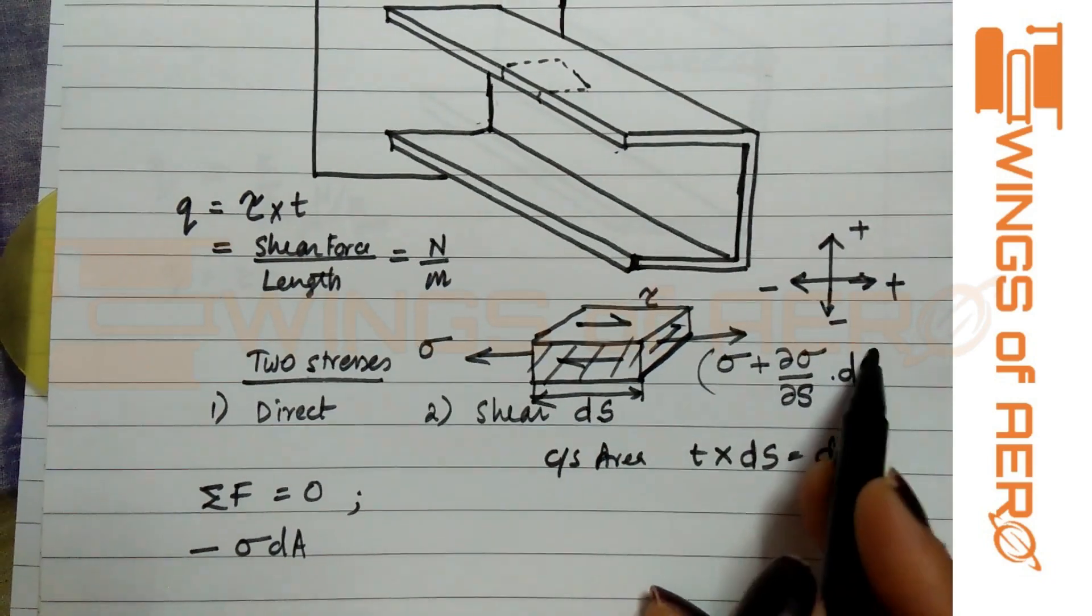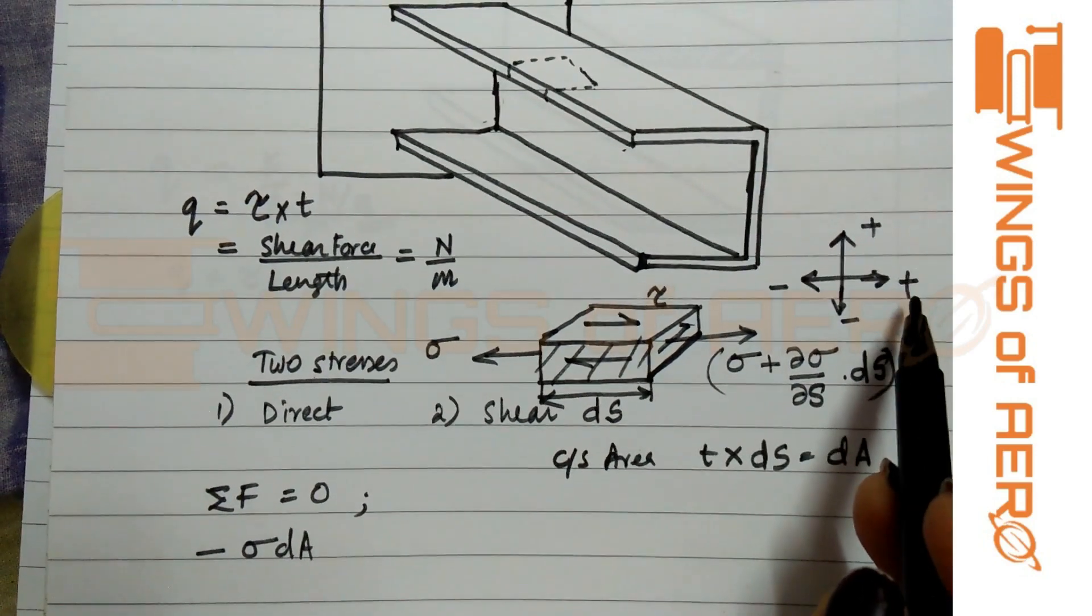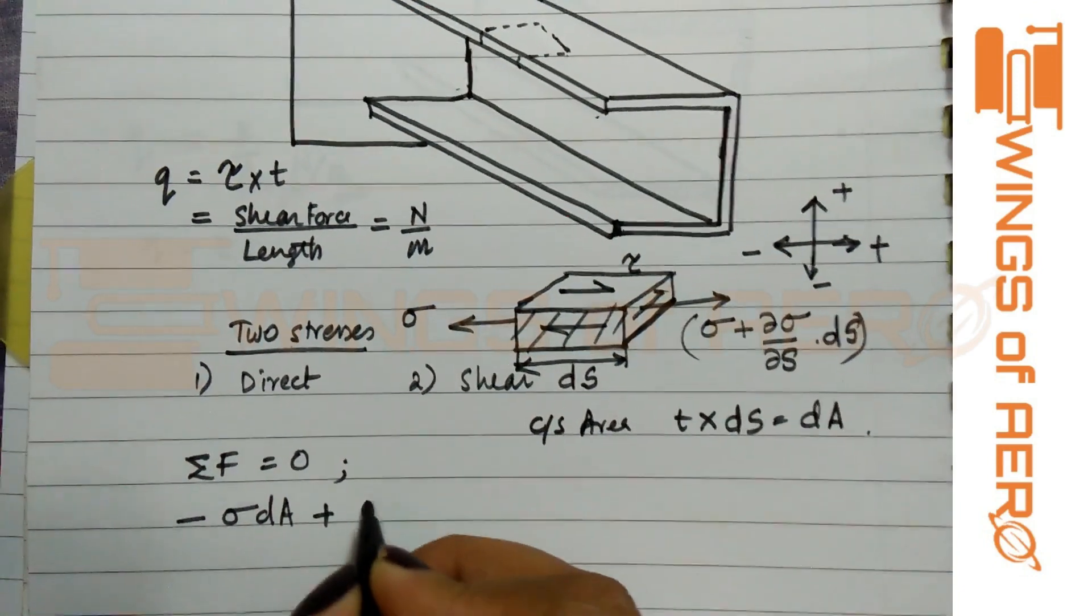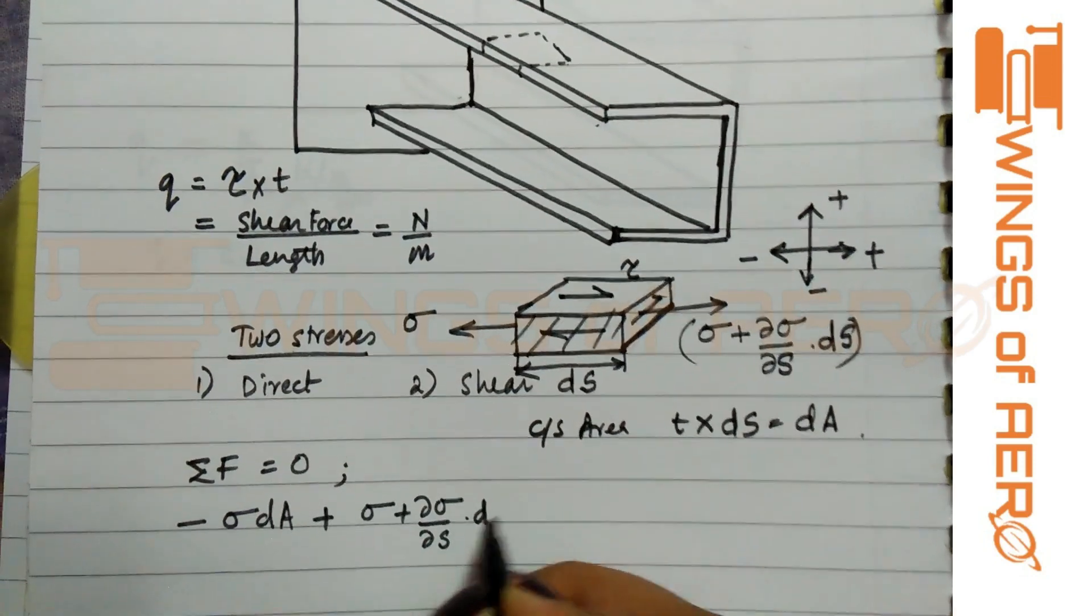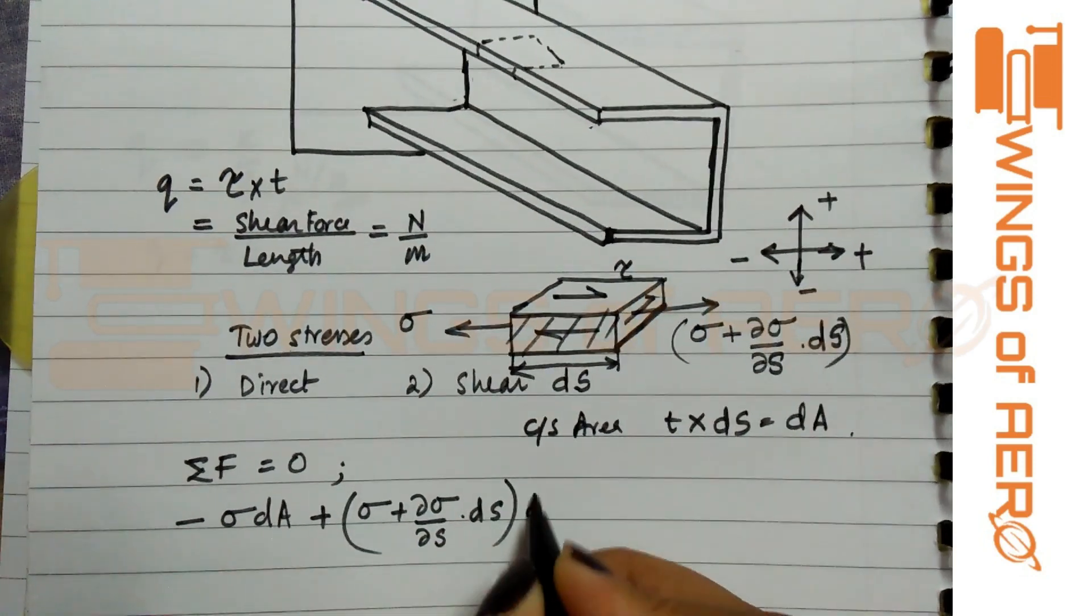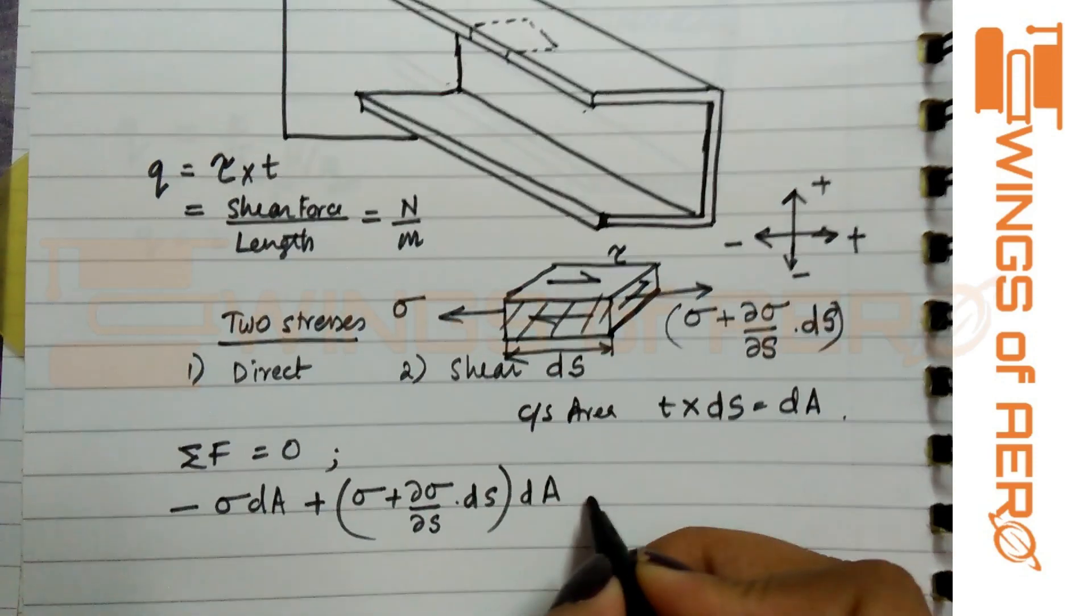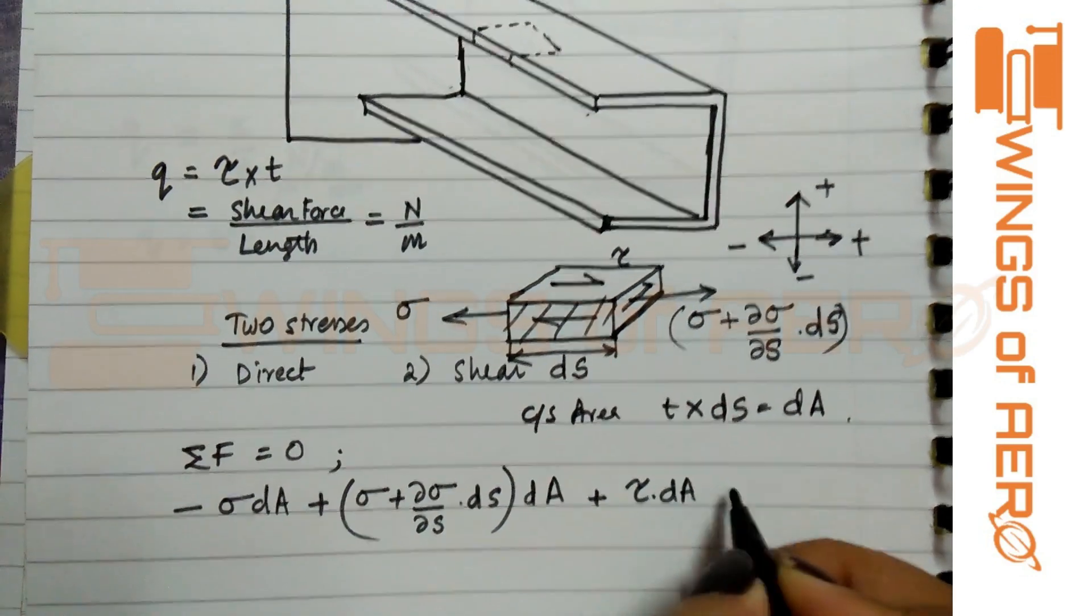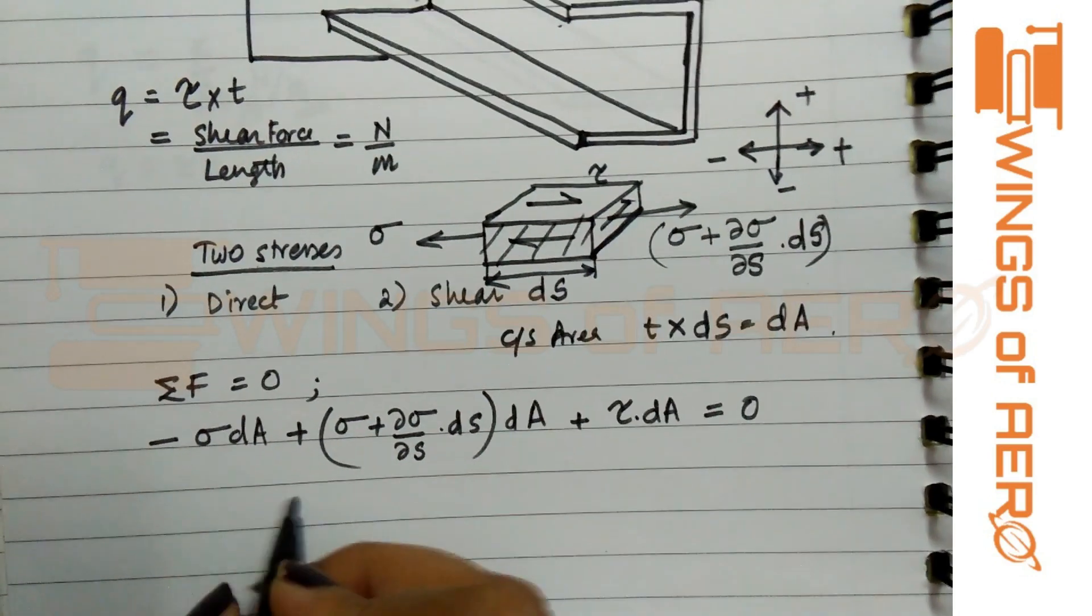We have the direction on this side, so we will take it as minus sigma dA. Now this part is towards the right-hand side, which is in the direction of positive. So we will write as positive sigma plus d sigma by ds into ds into dA. This is also in the right. So tau into dA equals zero.